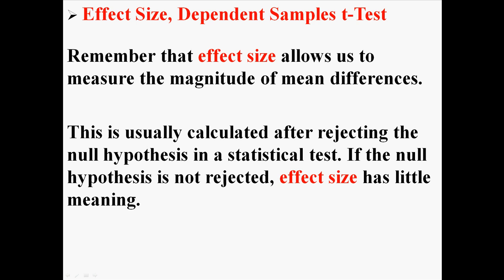Now this is usually calculated after rejecting the null hypothesis in a statistical test. By rejecting the null, we're saying that two means are different. If the null hypothesis is not rejected, effect size doesn't really mean anything. Because you can't say how different two means are if you already know that they're probably the same. This is only done after rejecting the null.